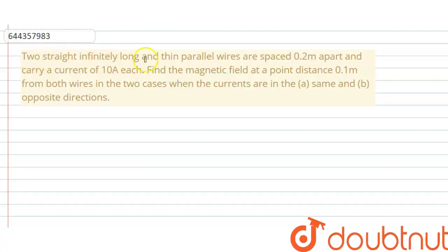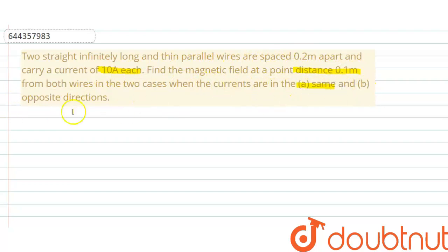Hello everyone. Let me explain this question to you. Two straight, infinitely long, thin parallel wires are spaced 0.2 meters apart and carry a current of 10 amperes each. Find the magnetic field at a point 0.1 meters from both wires in two cases: when the currents are in the same direction (Case A) and opposite directions (Case B).